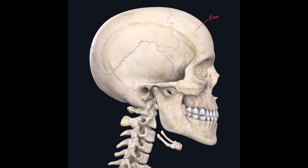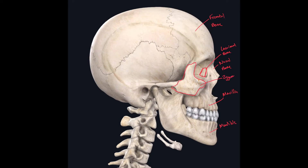Switching to a lateral view, we can again see the frontal bone, the mandible, the maxilla, and the nasal bone. This small bone right here, right in the corner of your eye, is called the lacrimal bone — lacrimal means tear, so this is the bone right where your tears come out. Again we have our zygomatic bone. Right here you can see an outline of another bone tucked away in the bony orbit — this one is called your ethmoid bone.